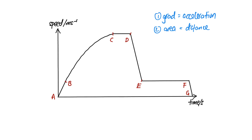Let's describe the motion at the various stages of the jump. From A to B, it's a constant gradient — the skydiver just jumped out from the aircraft — so that will be a constant acceleration. To be exact, the acceleration is due to gravity, which is 10 meters per second squared. But as you go faster and faster, air resistance comes into play.